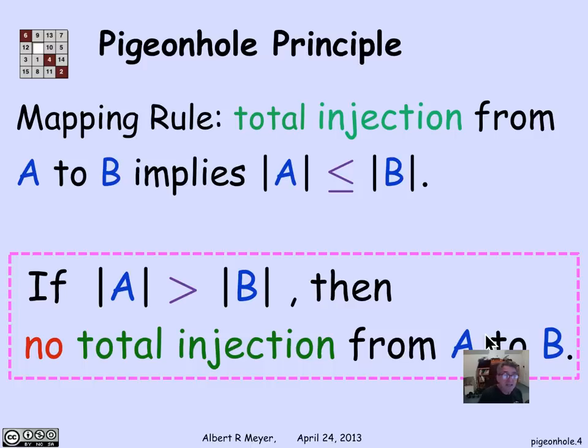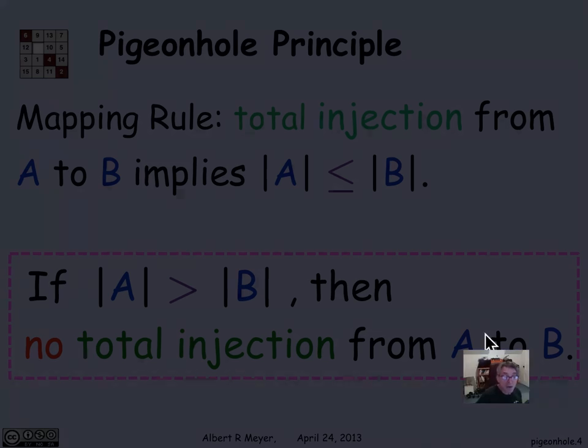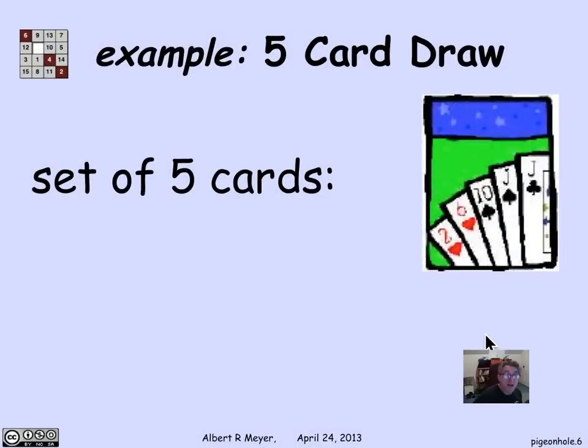We're not going to make elaborate uses of it in this little video. You can read in the text about some amusing applications about proving that there have to be three people in the Boston area with more than 10,000 hairs in their heads but the exact same number, or that there have to be two different subsets of 90 numbers of 25 digits that have the same sum.